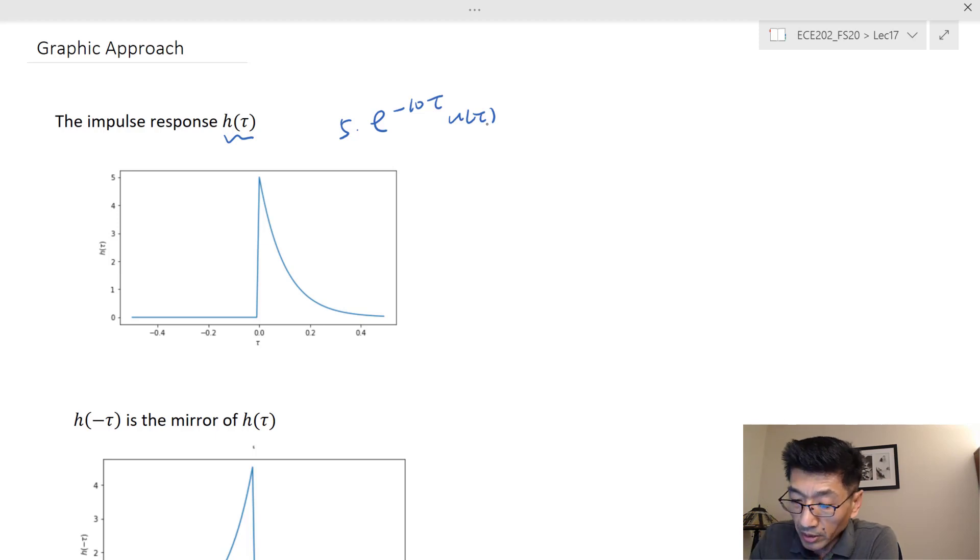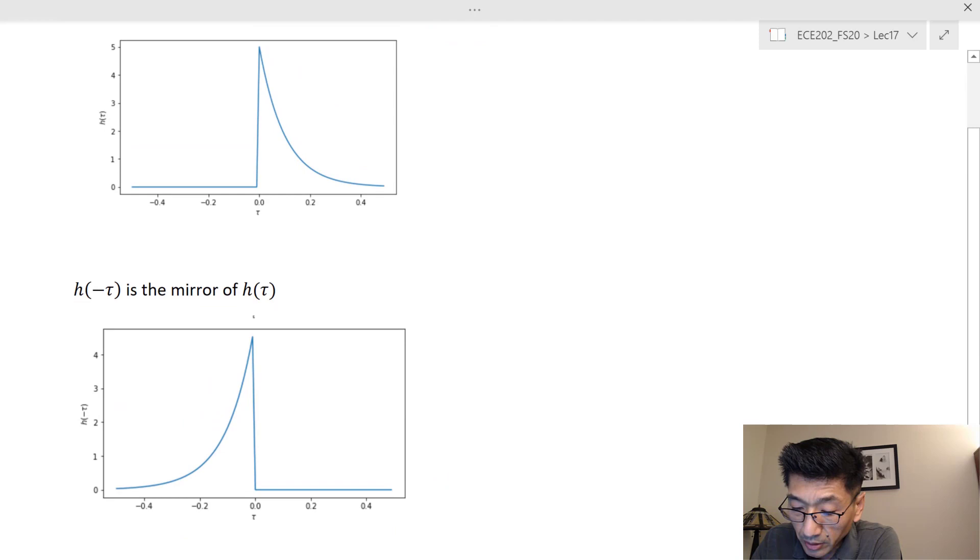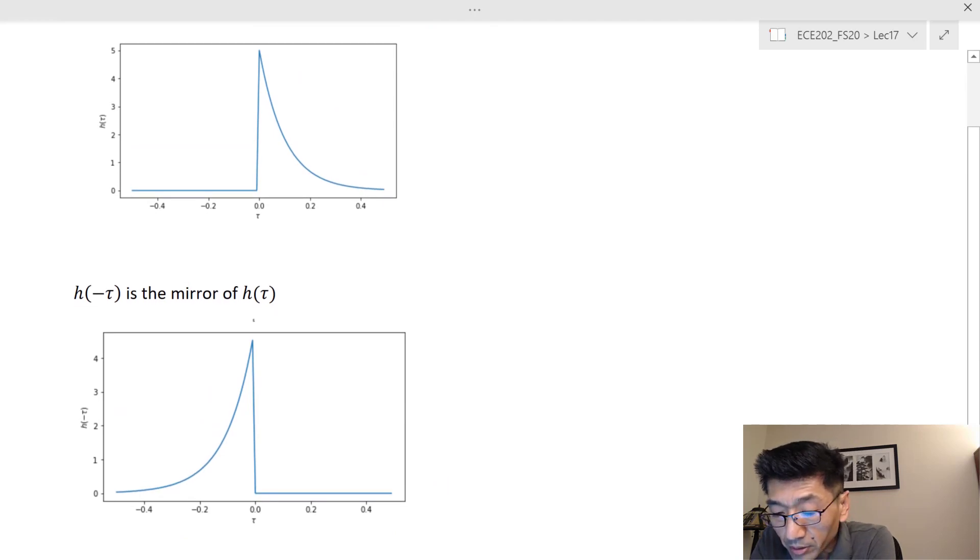If you look at h minus t, h minus t is just a mirror of h(t) with respect to the vertical axis. So this is the flip to the left.